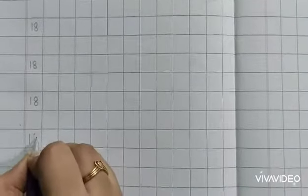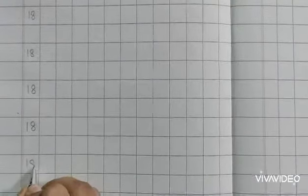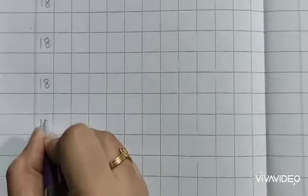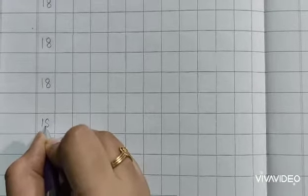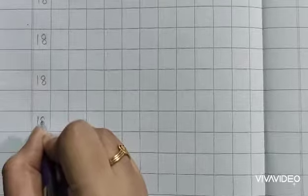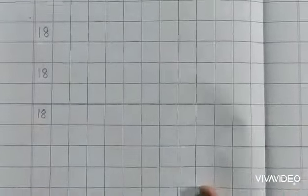So how to write 1, 8. 1, 8 is similar like S. At first you write S, capital S, and then join the curves. 1, 8, 18.